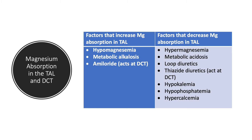Factors that increase magnesium absorption in the TAL and distal convoluted tubule include hypomagnesemia — if magnesium is low in the blood, reabsorption goes up. Metabolic alkalosis will also increase it. Amiloride works on the DCT as a blocker of the ENaC (epithelial sodium channel), and it increases reabsorption of not just magnesium but potassium as well.